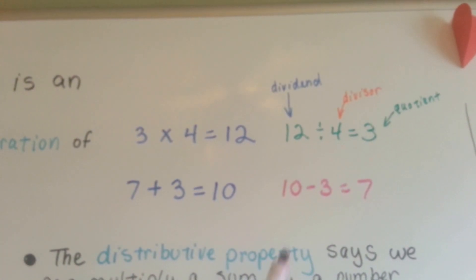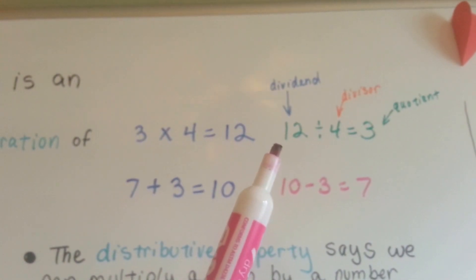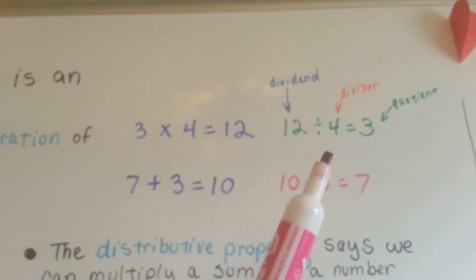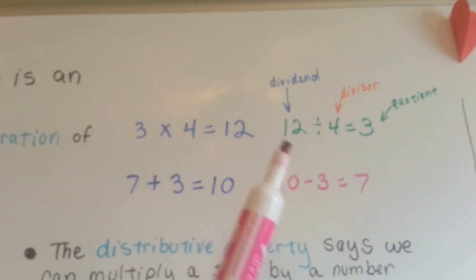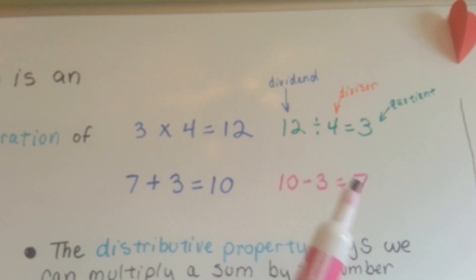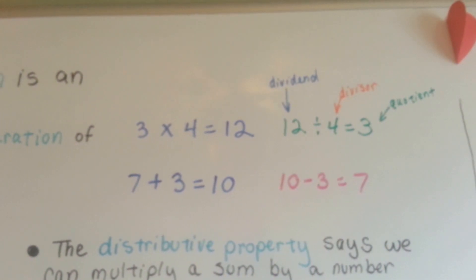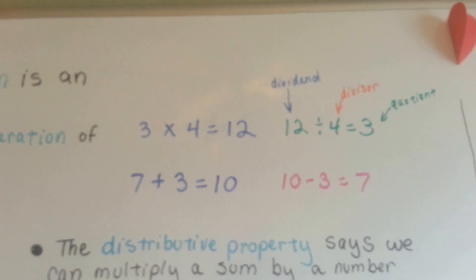Remember that the big number is the dividend. The one that we're dividing into it is the divisor, and the answer is the quotient.